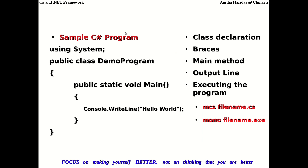Here is a sample C# program. As usual, you will have the using directive. To use basic system input/output methods and classes, you must use the System namespace. You define a class name, and you must have a Main method to initialize execution, followed by a set of statements.